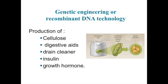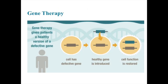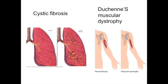These substances include cellulose, digestive aids, drain cleaner, and many important therapeutic substances such as insulin and growth hormone. A very exciting and important outcome of recombinant DNA techniques is gene therapy, which is when scientists insert a missing gene or replace a defective gene in human cells. This therapy has been used to treat some diseases such as cystic fibrosis and Duchenne's muscular dystrophy, but the results are still being evaluated. Someday, many diseases may be treated with gene therapy.